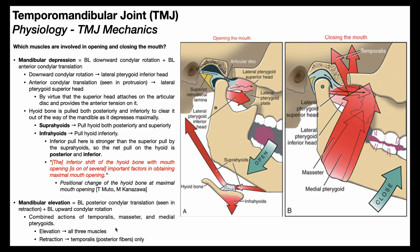Two additional things happen during mouth closing. First is the relaxation of the suprahyoids and infrahyoids. Recall they contract during mouth opening to pull the hyoid bone posteriorly and inferiorly, out of the way of the depressing mandible. During mouth closing, when these muscles relax, the hyoid is able to move back to its original position, moving in the opposite directions — anteriorly and superiorly — to return to its original spot.